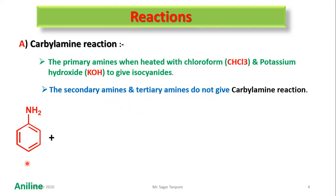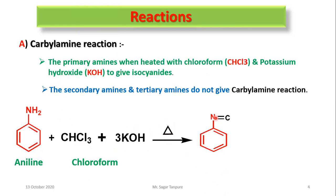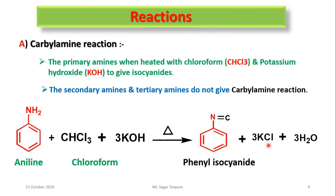Take aniline plus chloroform and potassium hydroxide — 3 moles of KOH — under heating conditions. This forms phenyl isocyanide (phenyl isonitrite), with 3 moles of KCl and 3 moles of water as byproducts. This reaction only gives a positive result with primary amine.